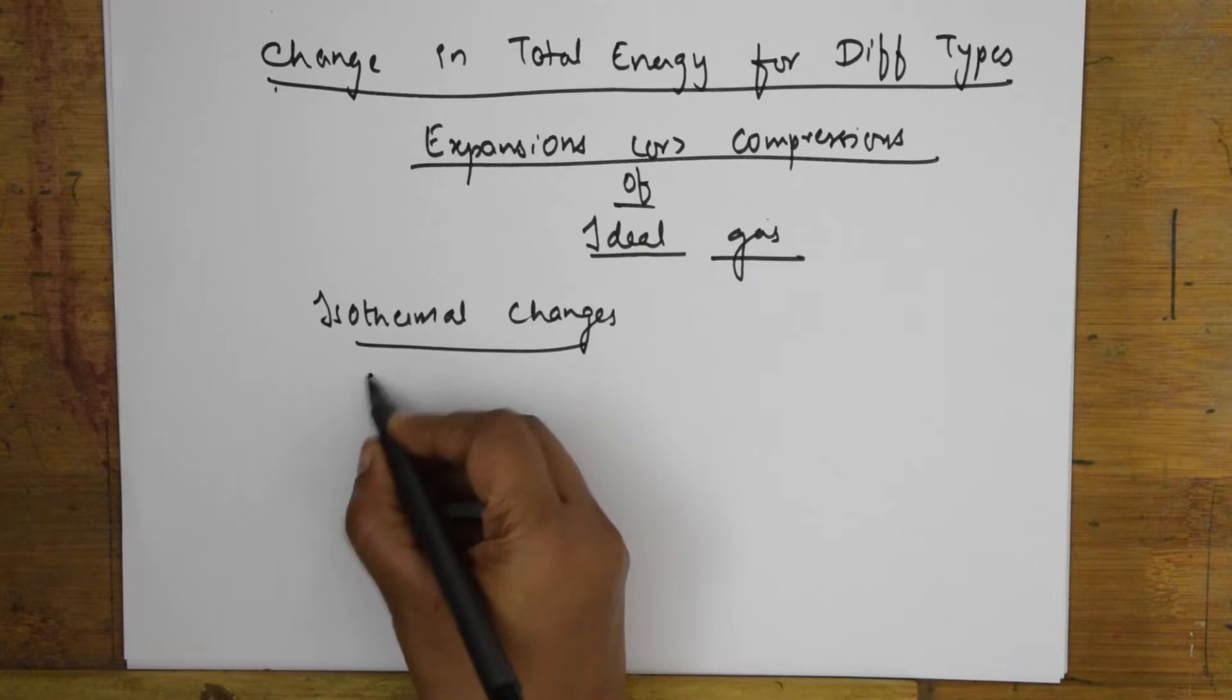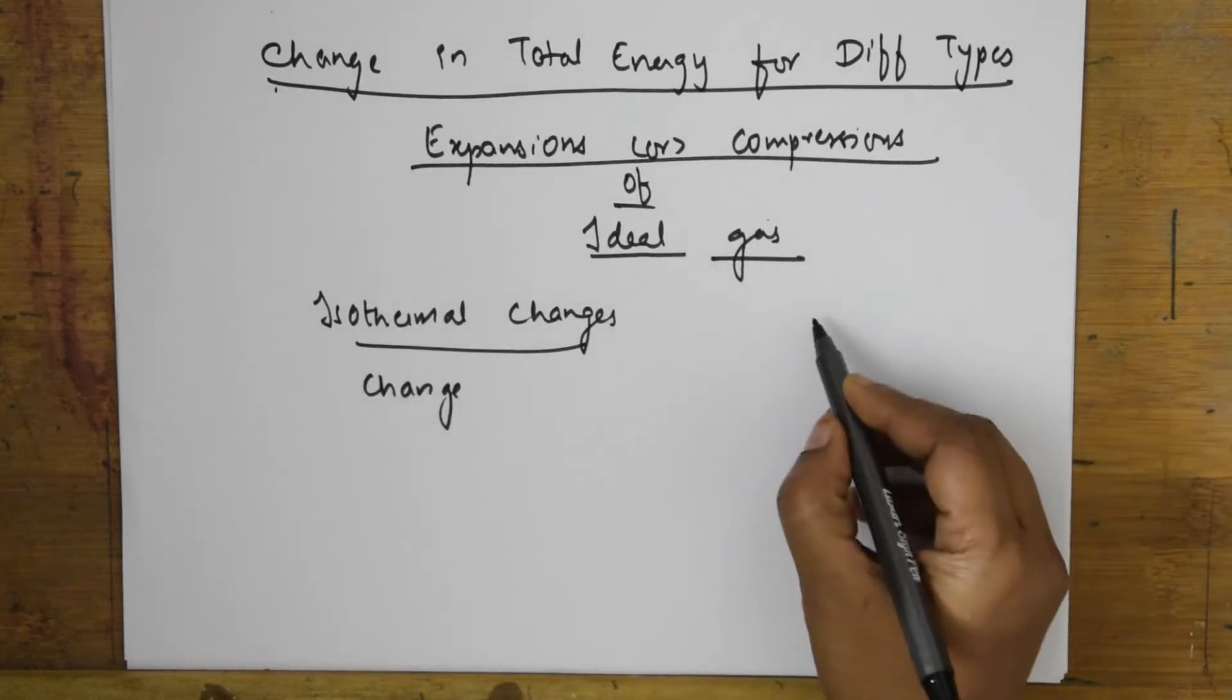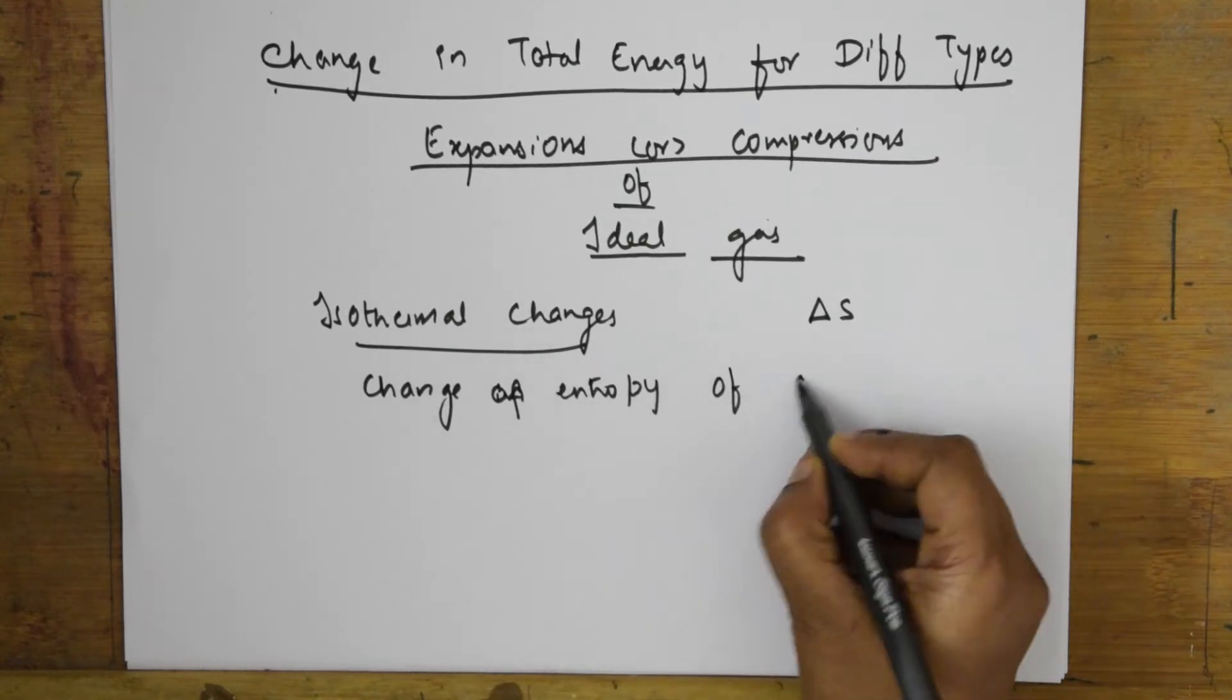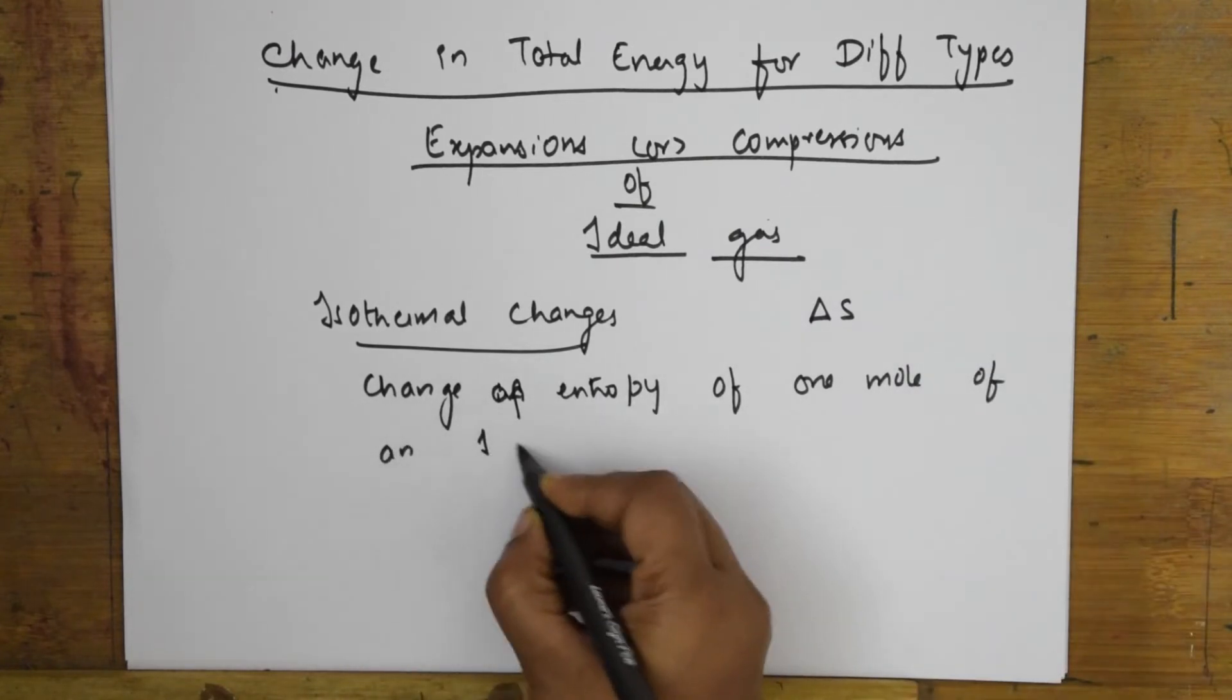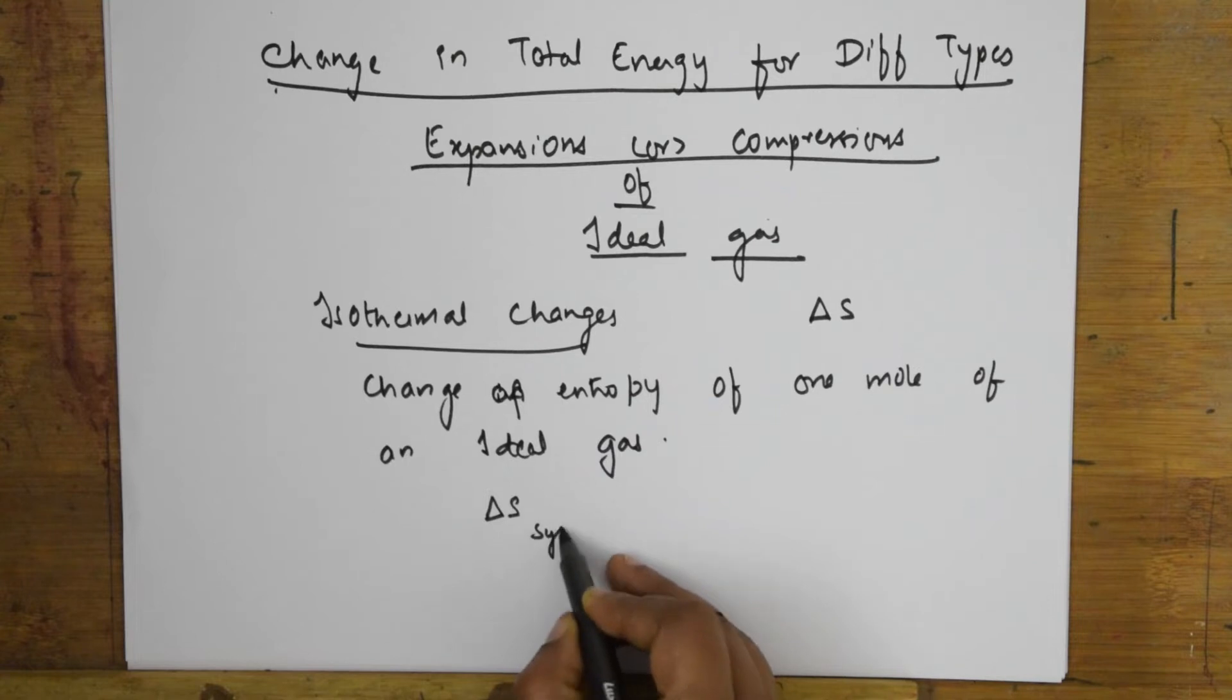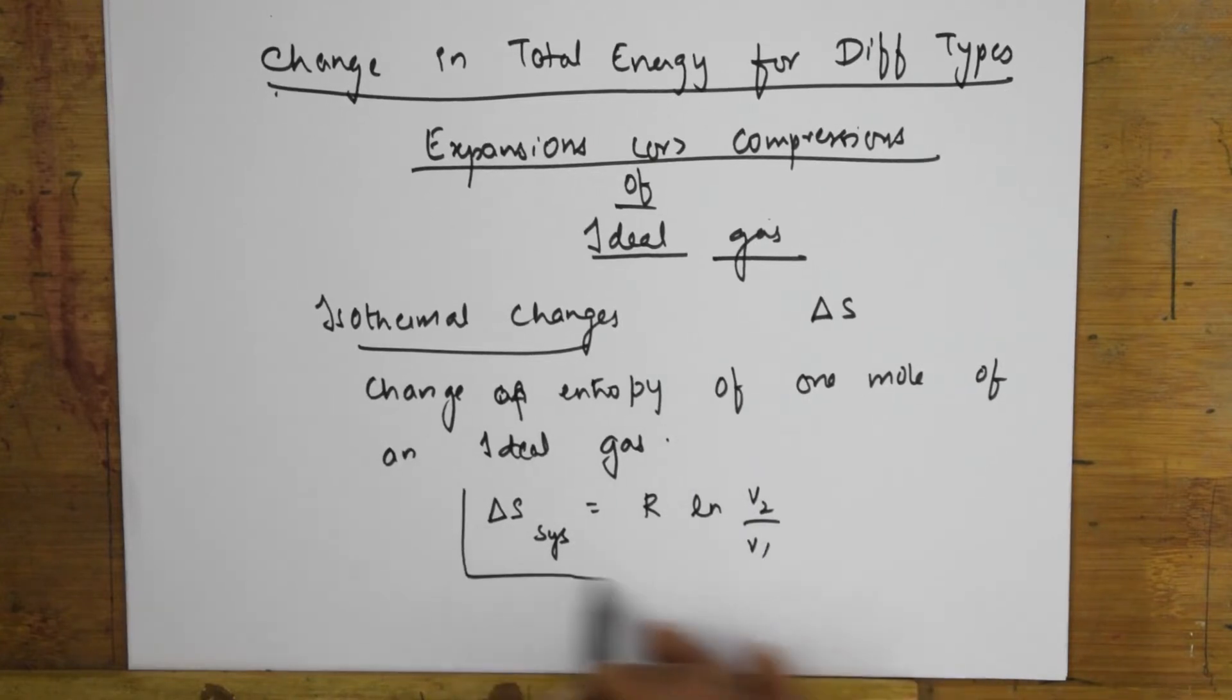So for the change of entropy, how is entropy denoted? It is denoted by delta S. Now change of entropy of one mole of an ideal gas, how will I write that? It is denoted by delta S system. This is the formula which is given to you: R ln V2 by V1.